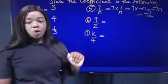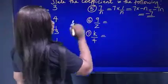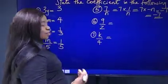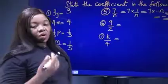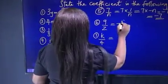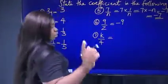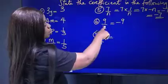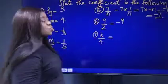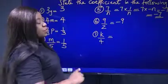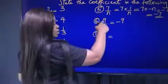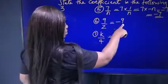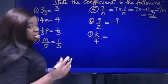Looking at another example in number 6, which is similar to number 5: we have 9 over z. So what is the coefficient of z? The coefficient of z is minus 9, because z is the denominator. We cannot keep 1 over z as the coefficient. So we have to make z a whole term, which means the numerator becomes negative. Therefore the coefficient of z is minus 9.